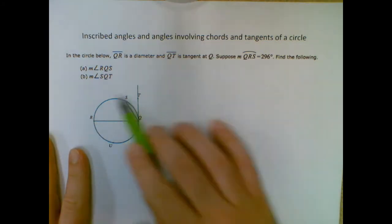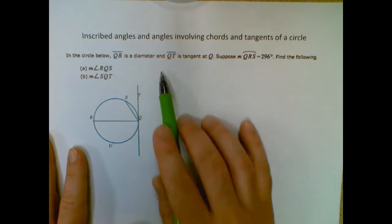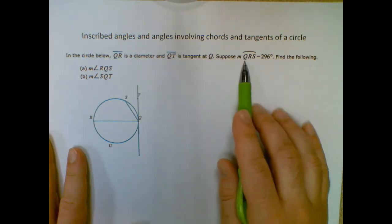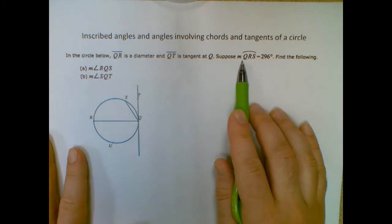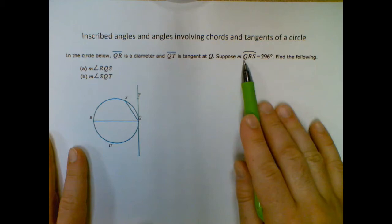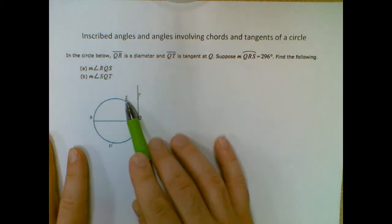So we have a circle here, and we know that QR here is our diameter. Qt is tangent at Q, and we know that the measure of the major arc of QRS is 296 degrees.